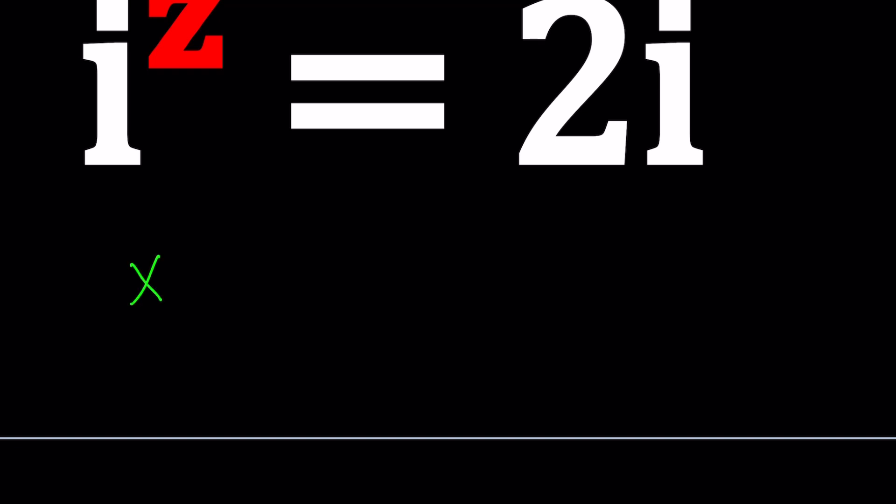I want to use a variable base in this case. x to the power n equals 2x. I mean, i is a constant so I should probably use a constant base. But let's just go ahead and consider this. Can we solve this equation? Absolutely.